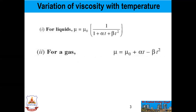Now we will see the variation of viscosity with temperature. Temperature affects viscosity: the viscosity of liquids decreases with increase of temperature, while the viscosity of gases increases with increase of temperature. This is because viscous forces in a fluid are due to cohesive forces and molecular momentum transfer. In liquids, cohesive forces predominate over molecular momentum transfer. With increase in temperature, cohesive forces decrease, resulting in decreasing viscosity. In gases, cohesive forces are small and molecular momentum transfer predominates, so with increasing temperature, molecular momentum transfer increases and hence viscosity increases.